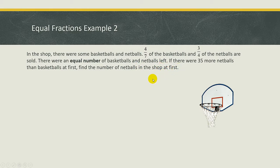So first of all, how do we know this question falls under the equal fraction concept? That's because when you see this keyword 'equal number.' This question says that after 4 over 7 of the basketballs and 3 quarters of the netballs are sold, there were equal number of basketballs and netballs left.